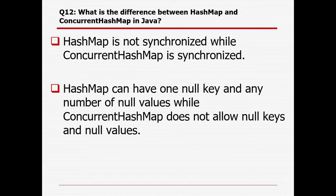What is the difference between HashMap and ConcurrentHashMap? HashMap is not synchronized, while ConcurrentHashMap is synchronized. HashMap can have one null key and any number of null values, but ConcurrentHashMap does not allow any null keys or null values.